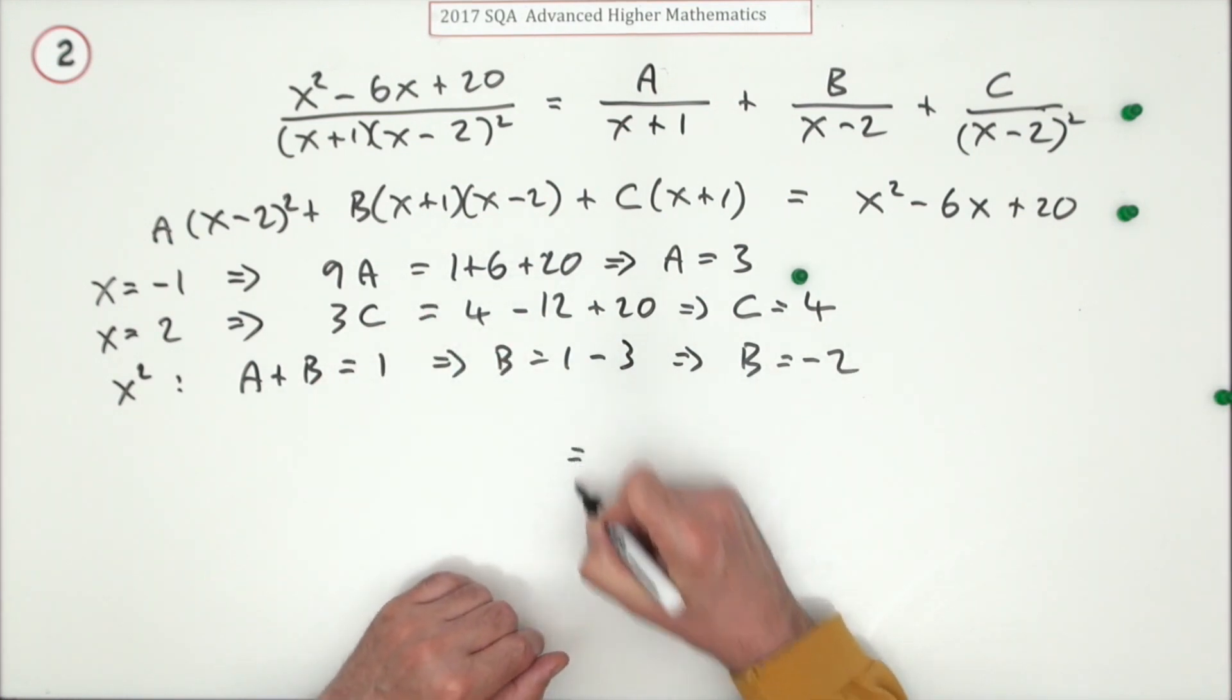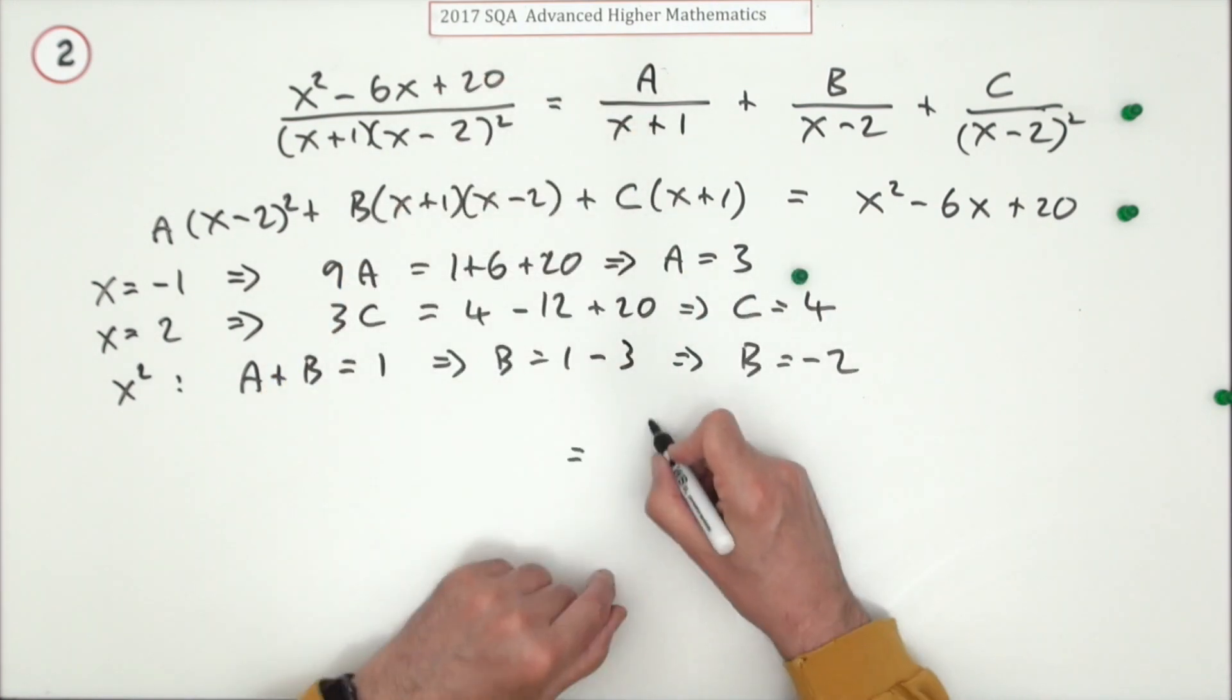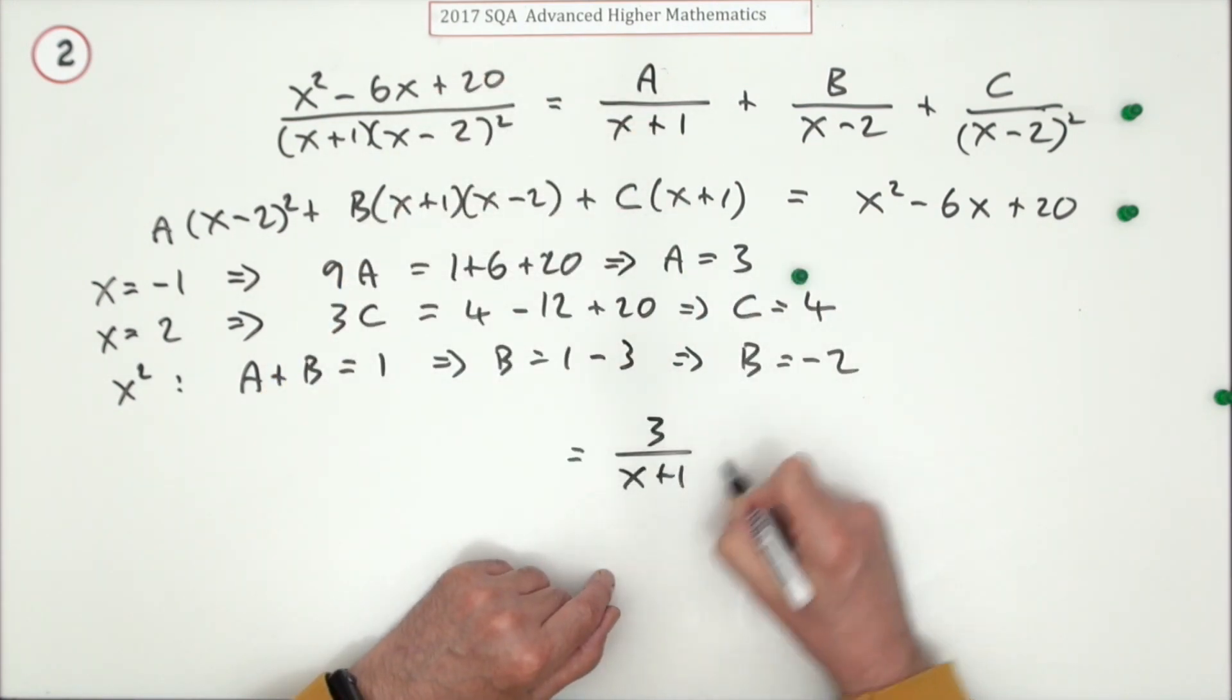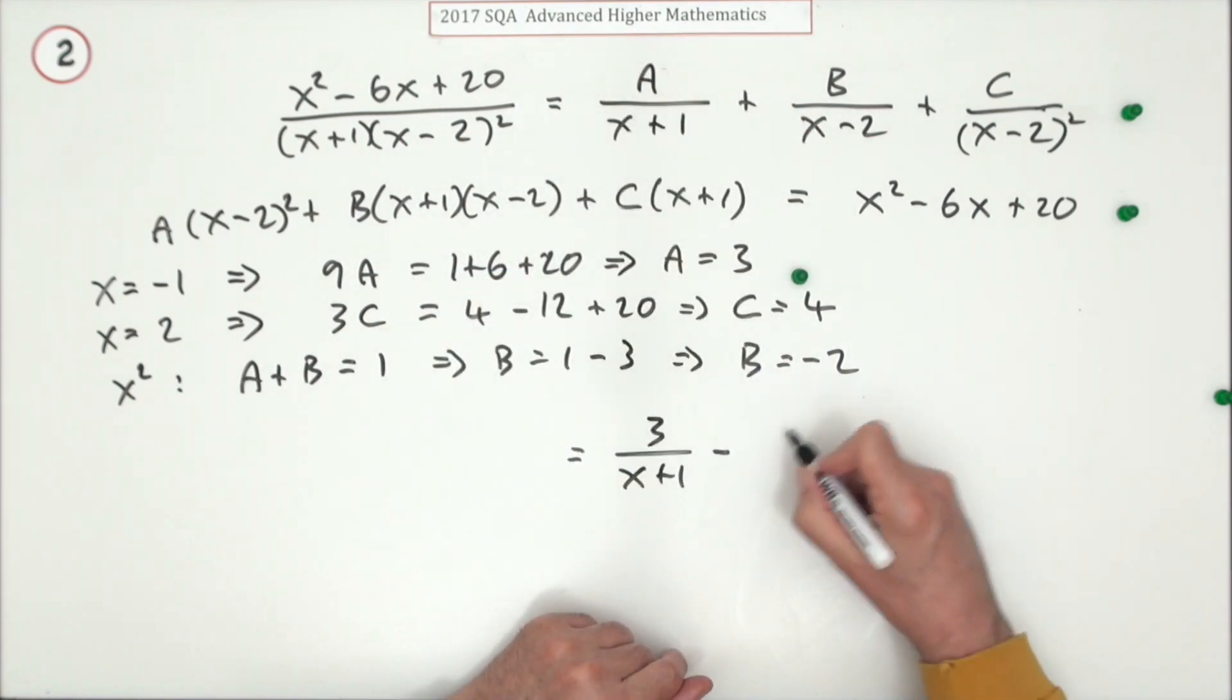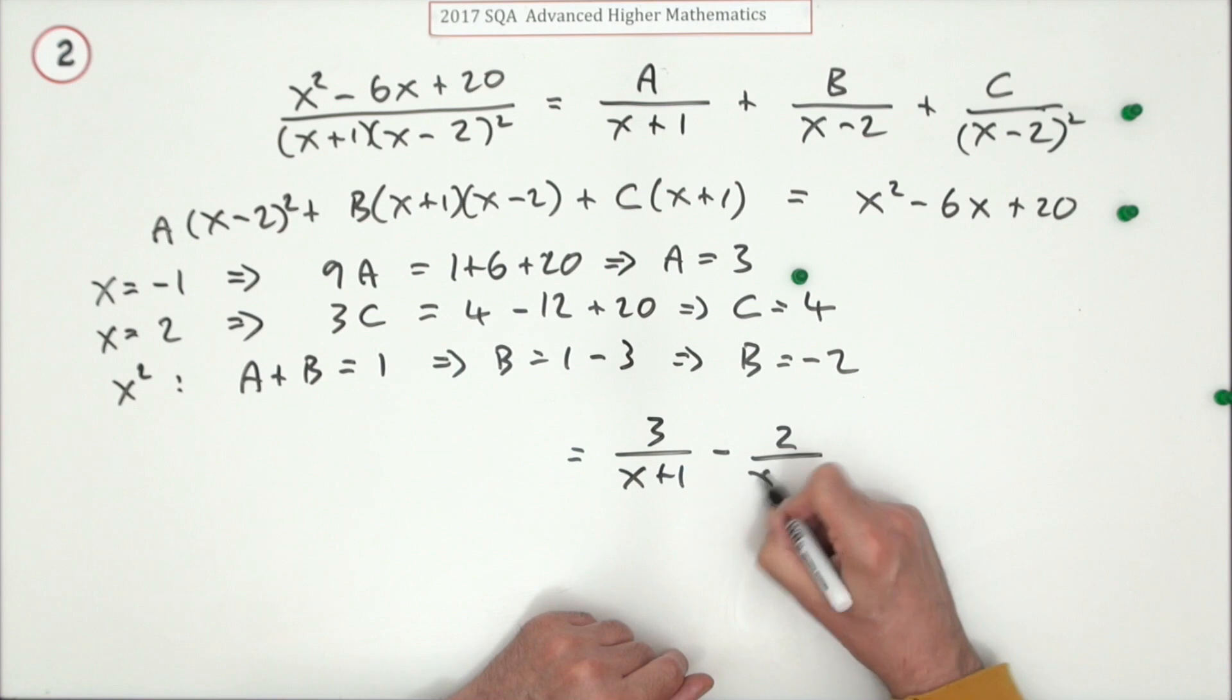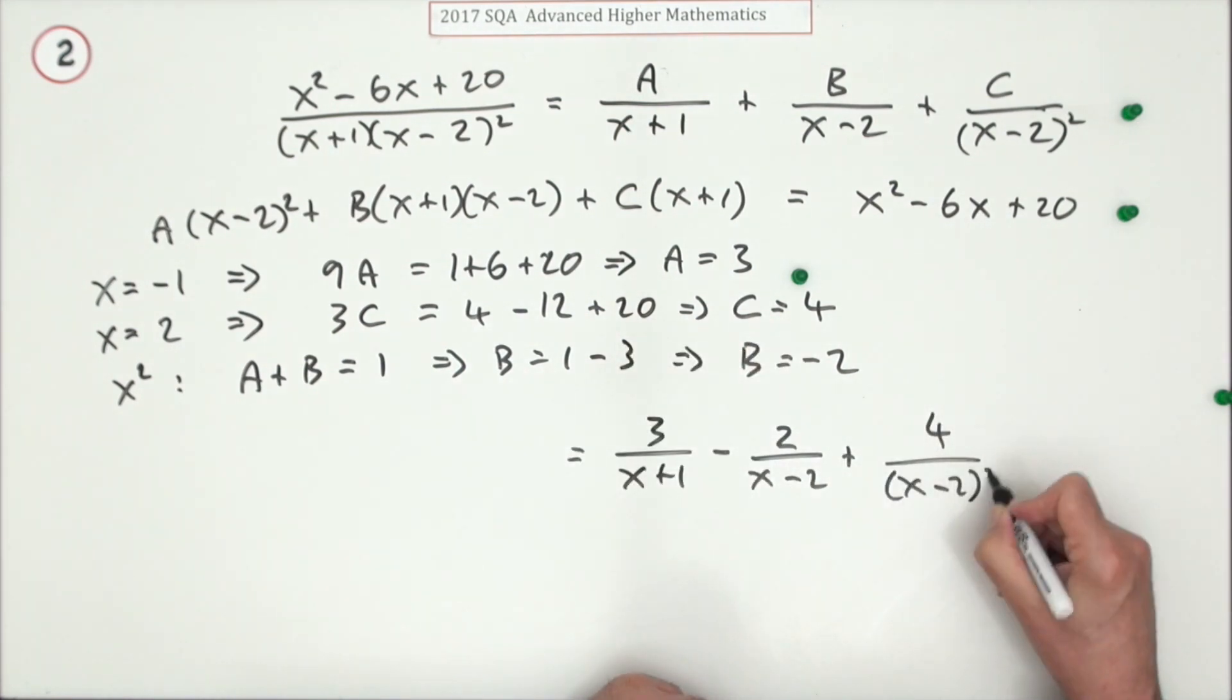There was one mark for getting two of the constants by whichever method you procured them, and the other mark for getting the third one and just putting it back together again. You've got A was three over x plus one, B is negative two over x minus two, plus four over x minus two squared.